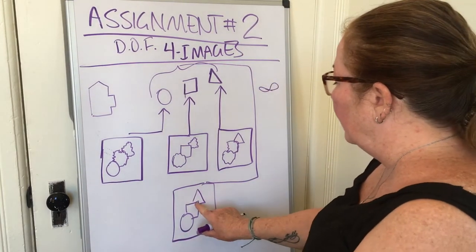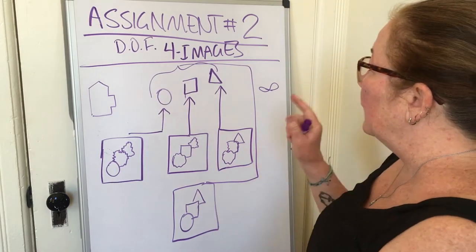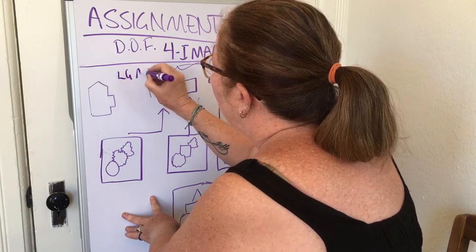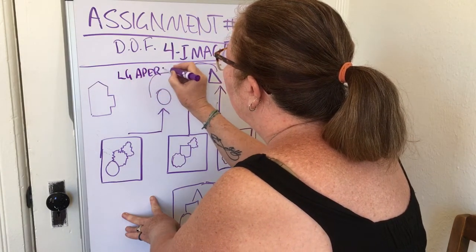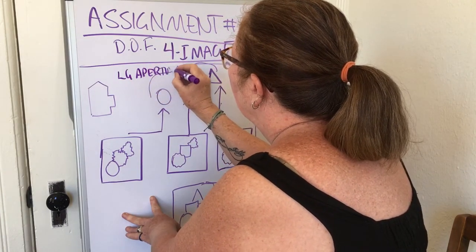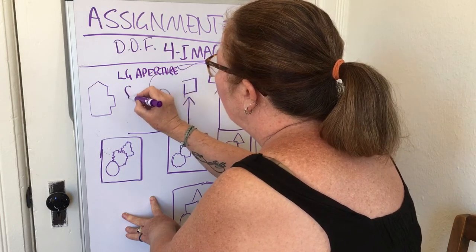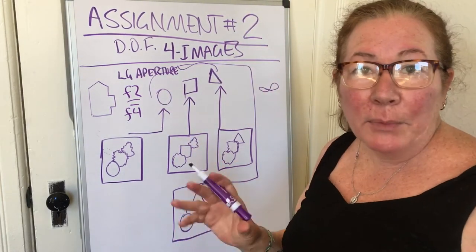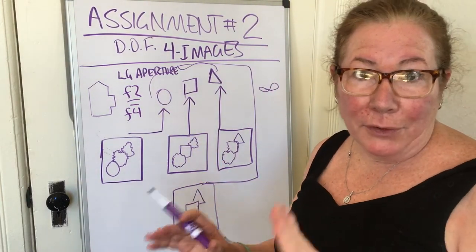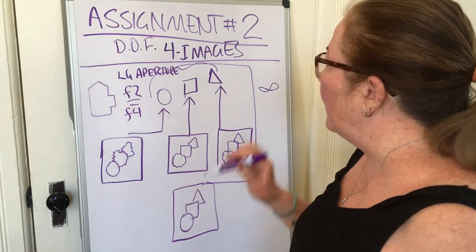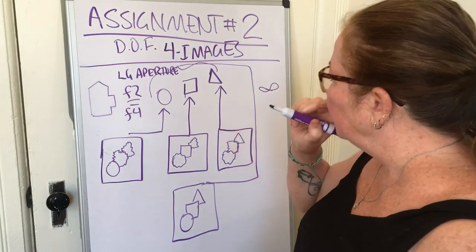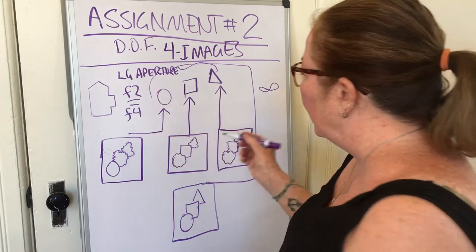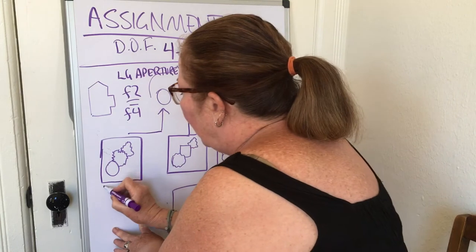To achieve this, start with a large aperture — the largest your camera can do. Probably an f/2; some people might have an f/4. Every lens and camera is different, so don't stress if you don't have exactly what we have. For the first three, use a large aperture and get close to your subject.